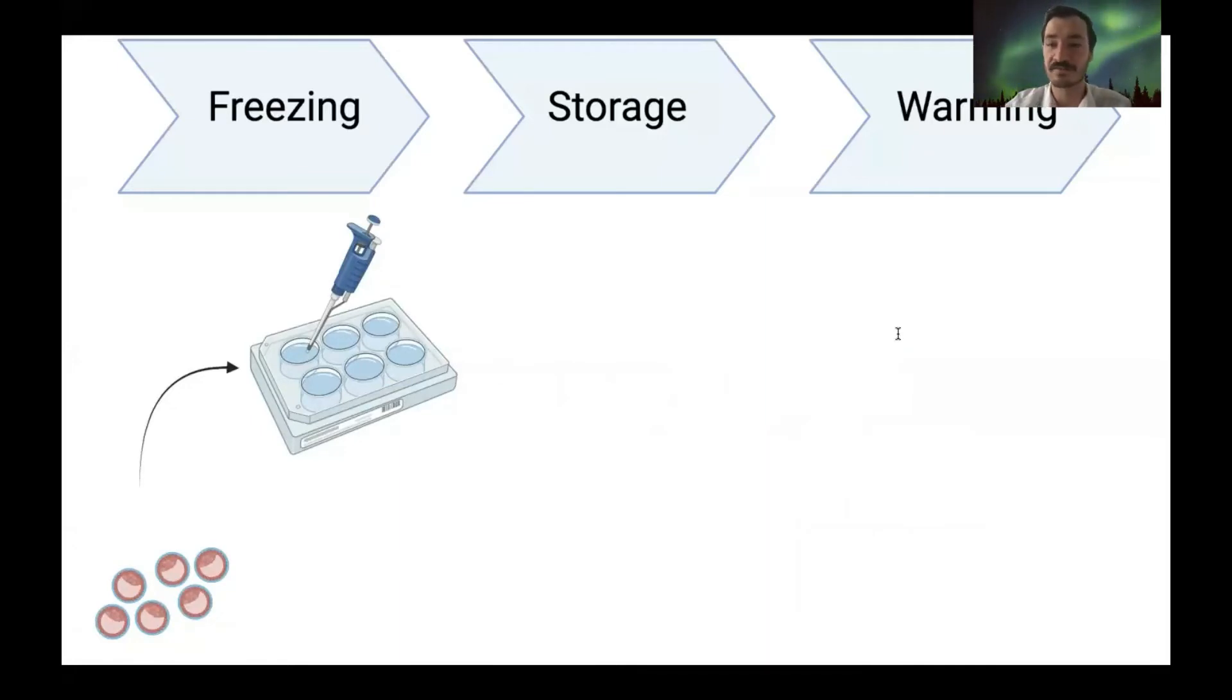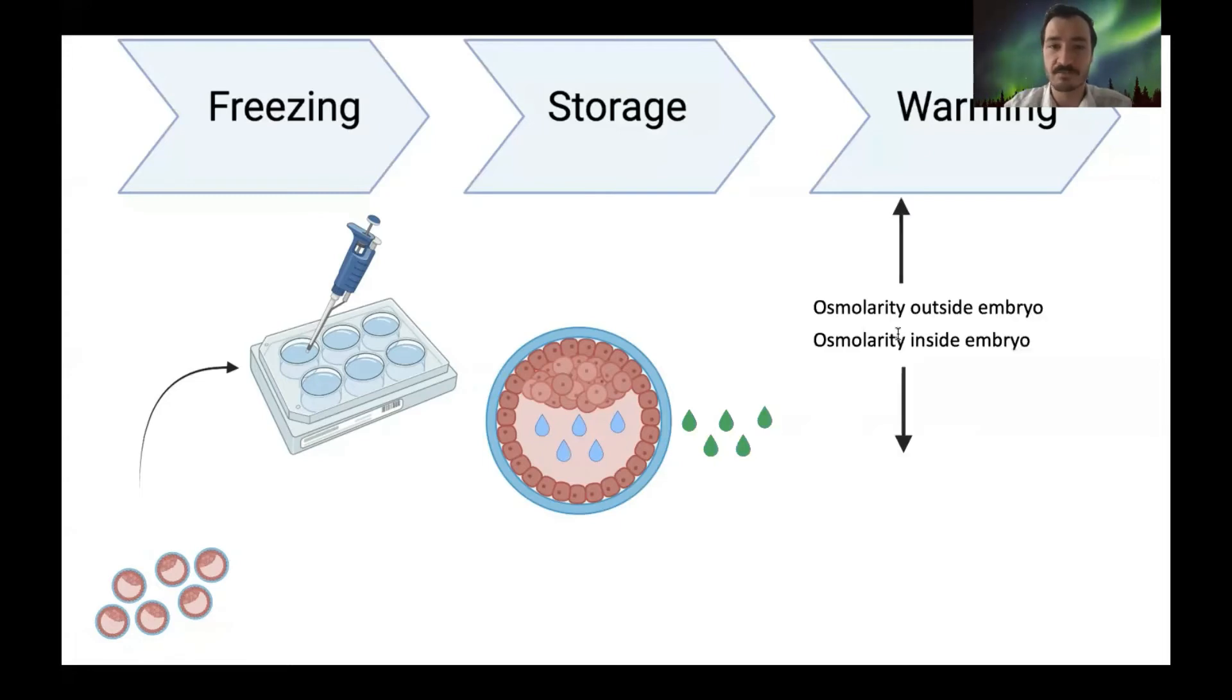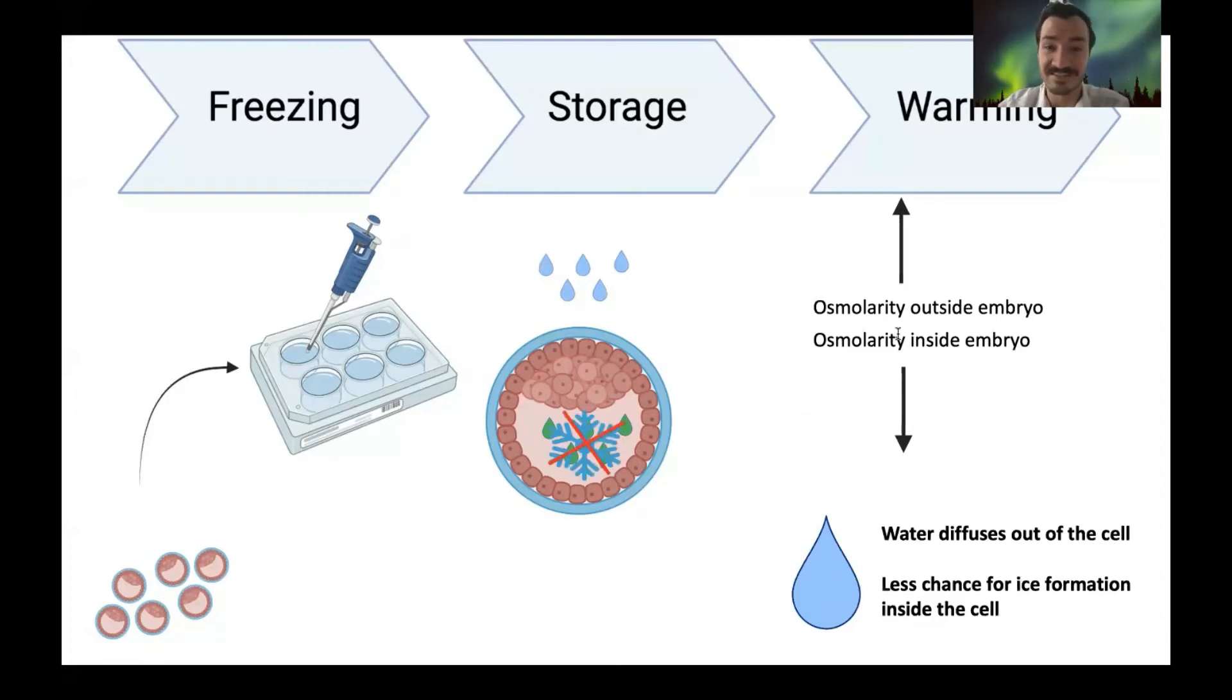These cryoprotectants work in a similar way to the sperm example in that they draw the water out of the cell. However, with vitrification protocols, the water does move out due to an osmolarity effect, but the cryoprotectants actually move in as well, thereby dramatically decreasing the chance for ice formation because there is no water within the cell.